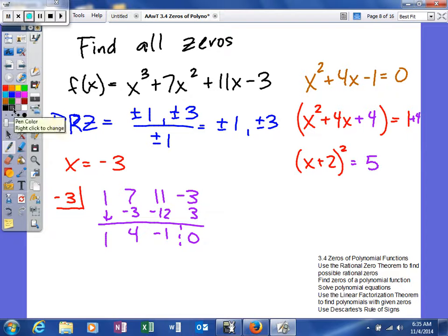So I get x plus 2 is equal to plus or minus the square root of 5. So we get negative 2 plus or minus the square root of 5.